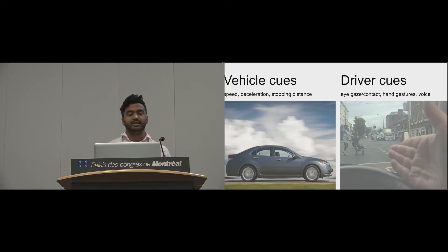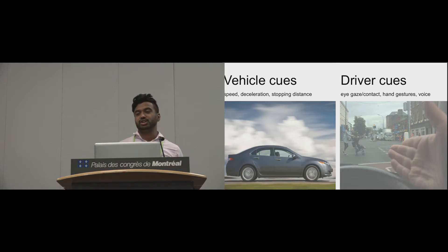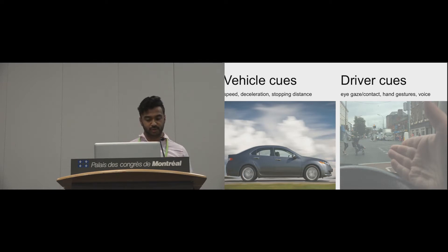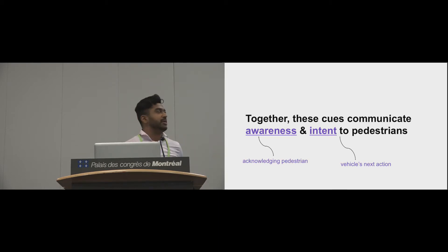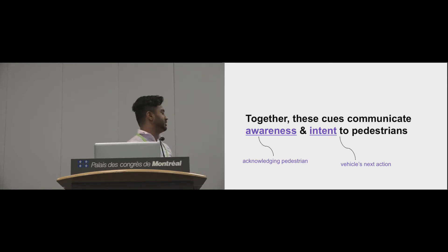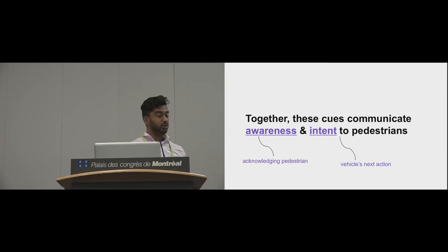The other type of cues pedestrians receive when making crossing decisions is more informal communication from the driver — things like eye gaze, hand gestures, and possibly even voice, depending on the driving culture. Together, both driver cues and vehicle cues communicate awareness and intent to pedestrians. Awareness is acknowledging the pedestrian's presence, and intent is communicating what the vehicle is about to do — whether it's about to stop or continue.